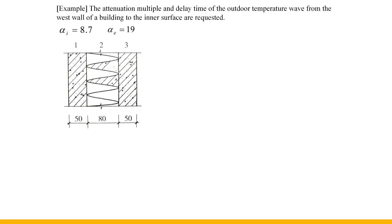Exercise: Find the attenuation multiple and delay time of the outdoor temperature wave from the facade of a building to the inner surface. The internal surface heat transfer coefficient is 8.7 and the external surface heat transfer coefficient is 19. The left side is indoor and the right side is outdoor. Since heat flows from outside to inside and level numbers are from inside to outside, the layers from left to right are numbered 1, 2, and 3. Layers 1 and 3 are 50 mm thick reinforced concrete and layer 2 is 80 mm thick rock wool board.